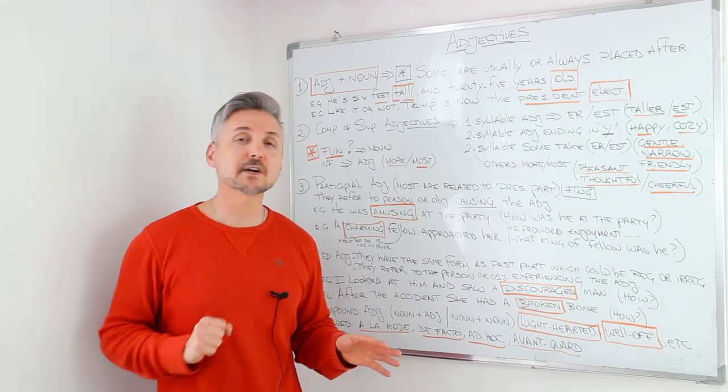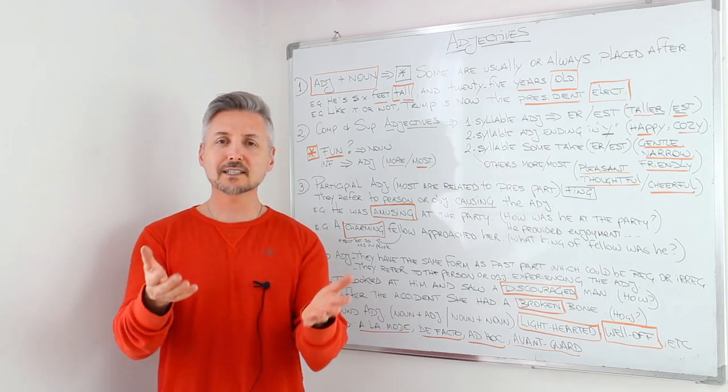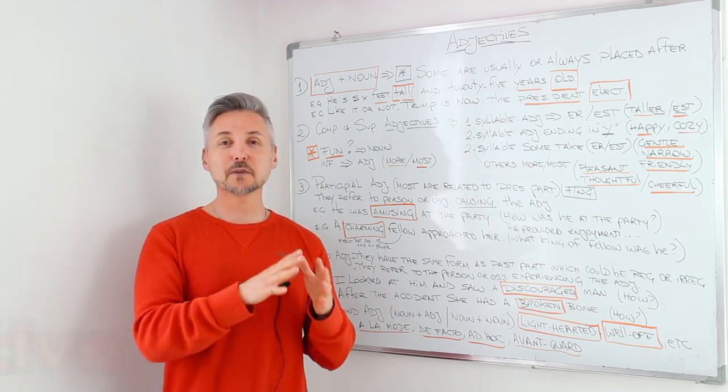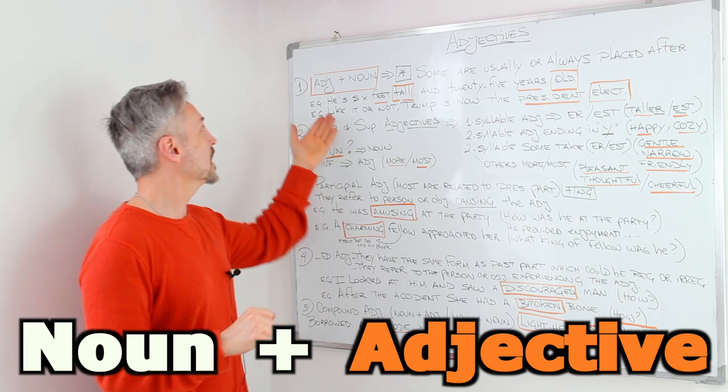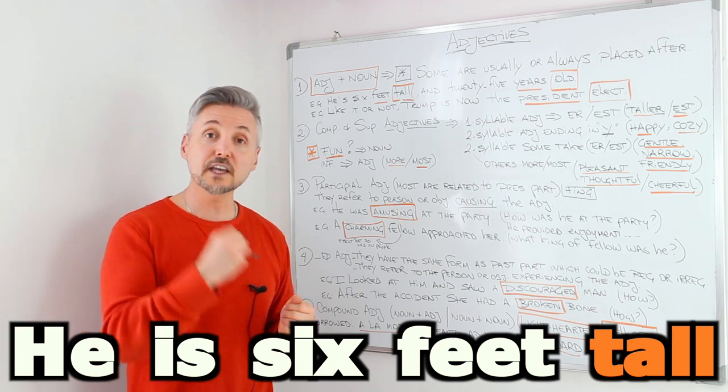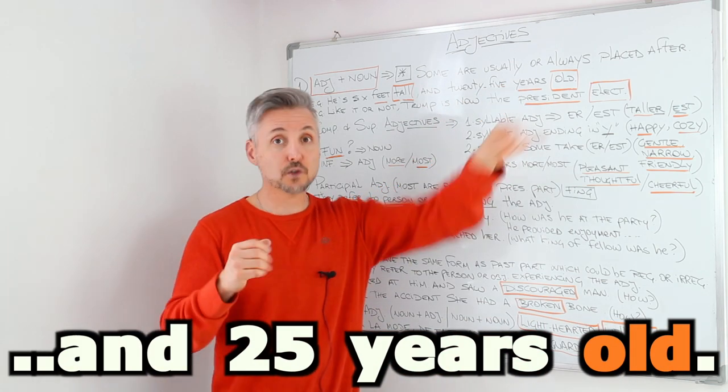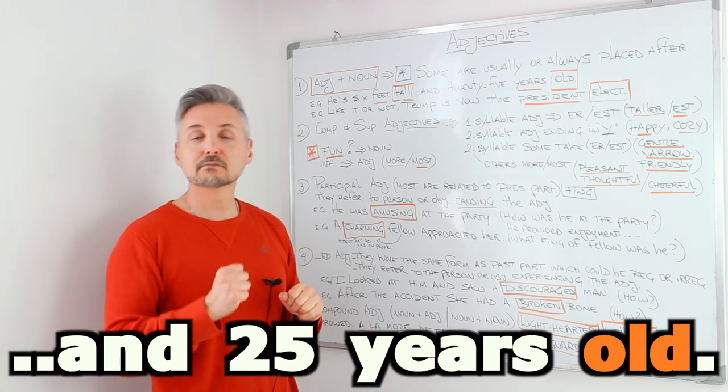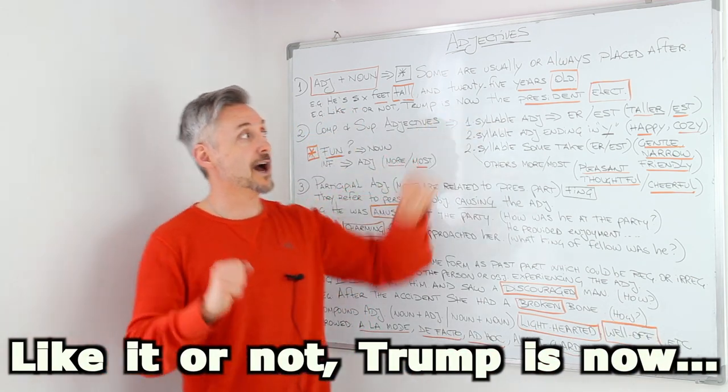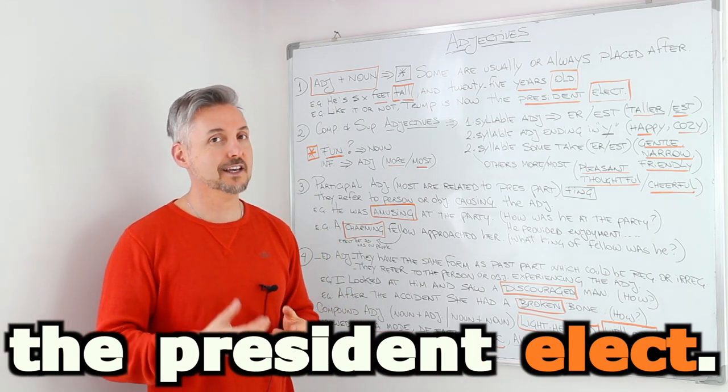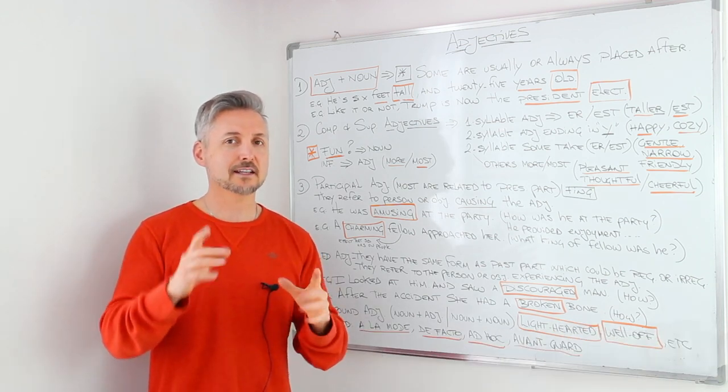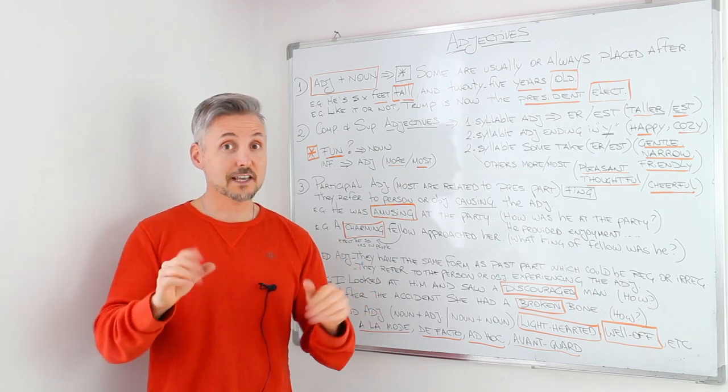I'm going to erase this. And I'm going to show you other points that you don't know about adjectives. Yes, we're going to talk about five points and exceptions about adjectives. As I said, adjectives go before nouns. But not always. Because we have noun plus adjectives. Just like my examples. He is six feet tall. Tall here is the adjective. Feet is the noun. And 25 years old. Years is the noun. Old is the adjective. Another example. Like it or not, Trump is now the president-elect. President is the noun and elect is the adjective. So don't take things for granted. And think about when you write something. There are a lot of exceptions in English.